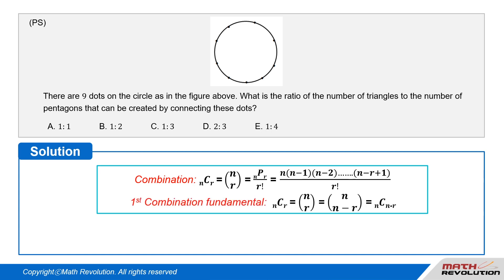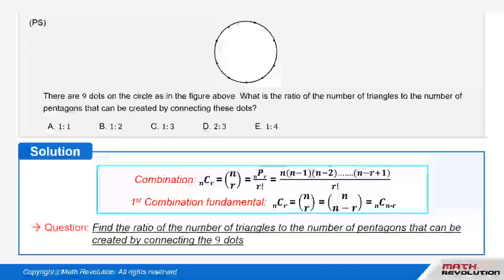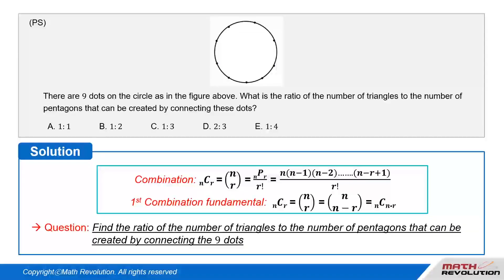We can apply the first fundamental property of combination: N choose R is equal to N choose (N minus R). We have to find the ratio of the number of triangles to the number of pentagons that can be created by connecting the nine dots.